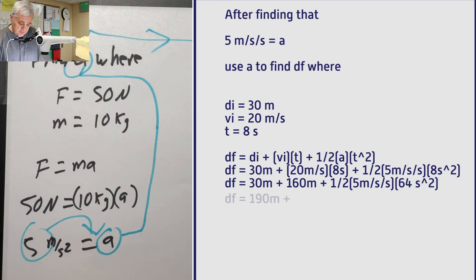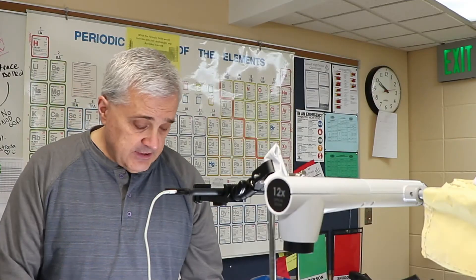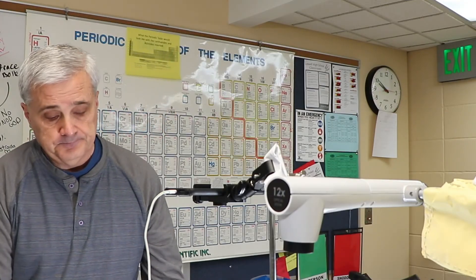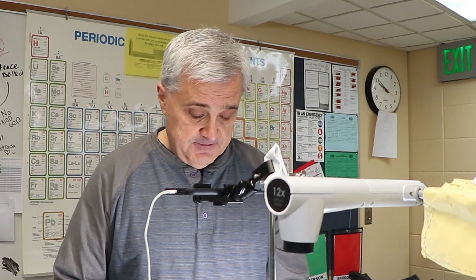d sub f equals, I'm just going to go ahead and combine those. 190 meters plus. All right, let's do this. Let's take half of 64, because 64 is an even number and I can take half of that. That's 32. So that's going to be 32 times 5. 32 times 5 is half of 320, and half of 320 is 160.